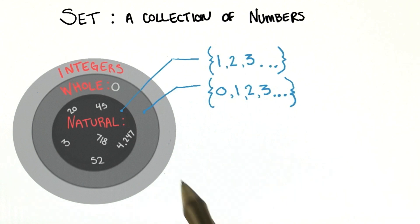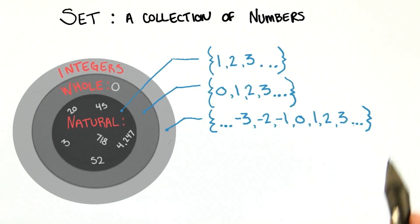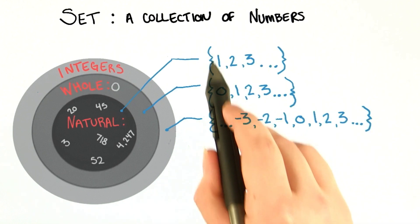And we might represent the set of integers like this, with ellipses on both ends to represent going on to infinity.